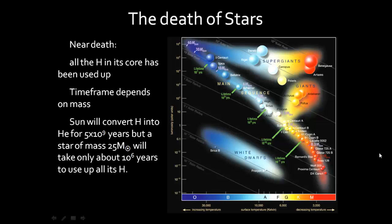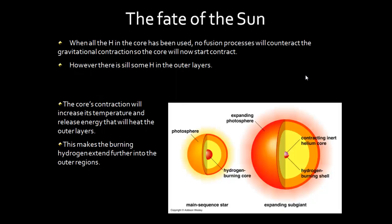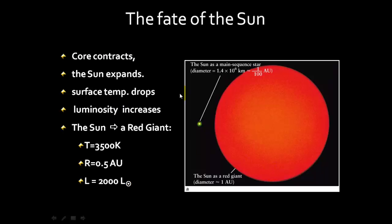When the Sun is on the main sequence and the hydrogen is used up, it drifts off into the giant branch on the HR diagram. It will go to become a red giant, when helium burning will start. We begin with a hydrogen burning core, and with time the helium core and the atmosphere start to expand. The core contracts, the Sun expands, the surface temperature drops, and the luminosity increases due to the greater area. The Sun becomes a red giant at roughly 3,500 Kelvin, with a radius of about half an astronomical unit, and it will be 2,000 times brighter than it is now.